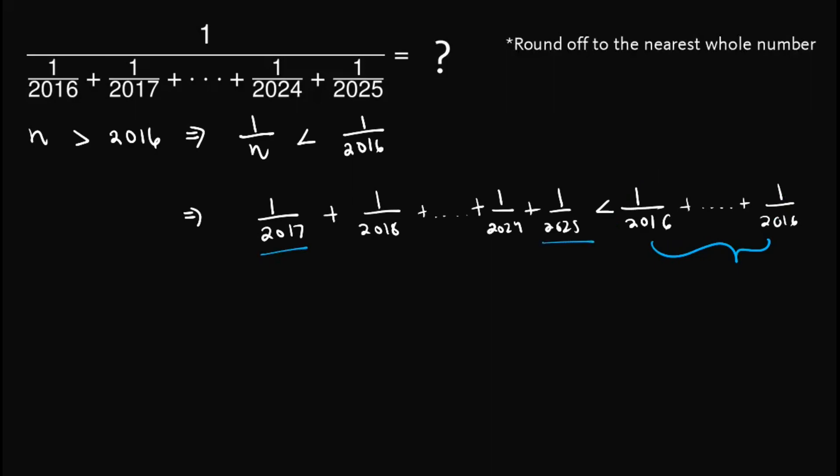Well, this one is starting from 2017 up to 2025. If we count that: 2017, 2018, 2019, 2020, 2021, 2022, 2023, 2024, 2025, that is 9 times. So we know that 1 over 2017 up until 1 over 2025 is less than 9 over 2016.